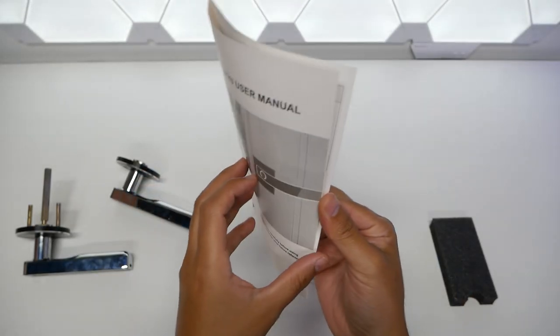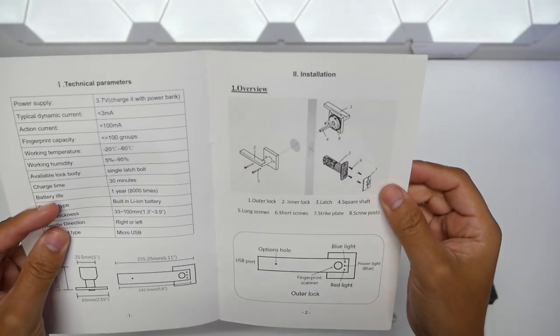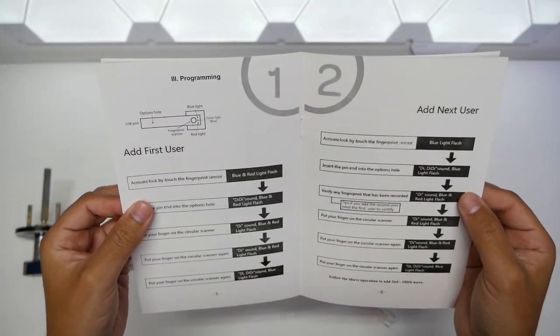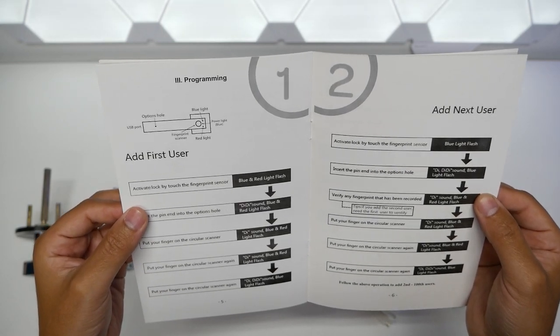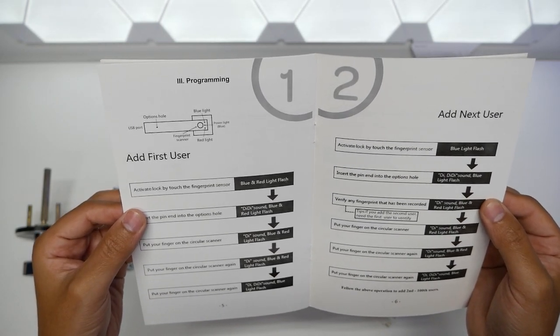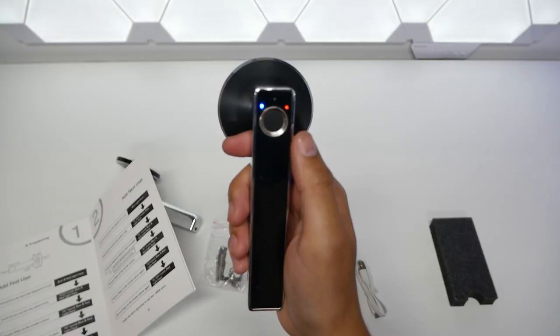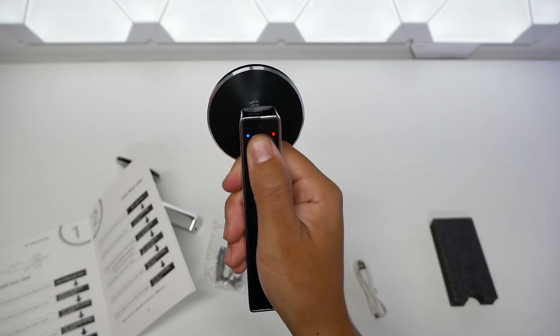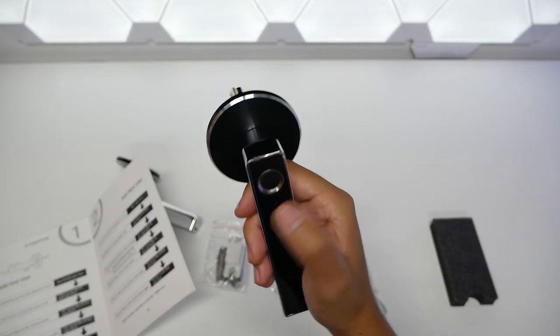So real quickly let me go into this user manual and show you the overview installation. How the fingerprint is gonna work for the program, add first user. So activate lock by touching the fingerprint sensor once we got a flashing. Now I can feel some kind of vibration for it.